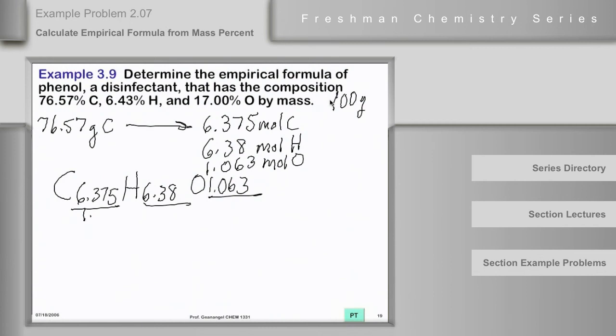Dividing each by 1.063, we end up with C6H6O. That's the empirical formula for phenol.